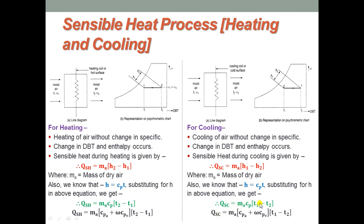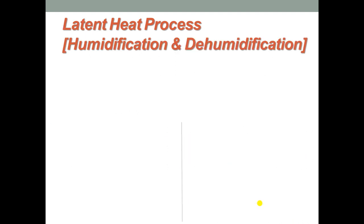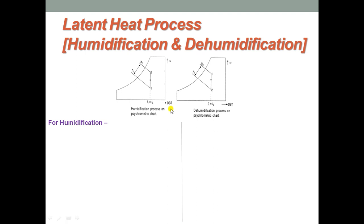This concludes the sensible heat process covering both heating and cooling. Moving on to the latent heat process, which is termed humidification and dehumidification. The psychrometric chart represents humidification where the line goes from 1 to 2 upward, and dehumidification where the line goes from 1 to 2 downward. Temperature is constant — T1 equals T2 — but enthalpy and specific humidity omega both change.